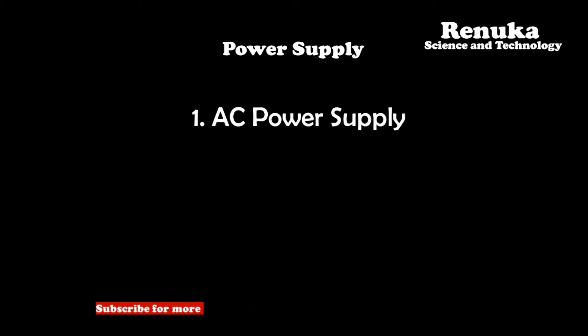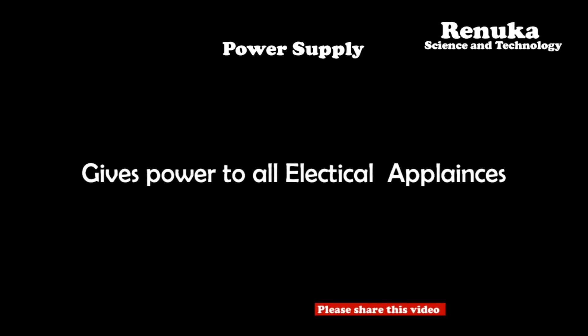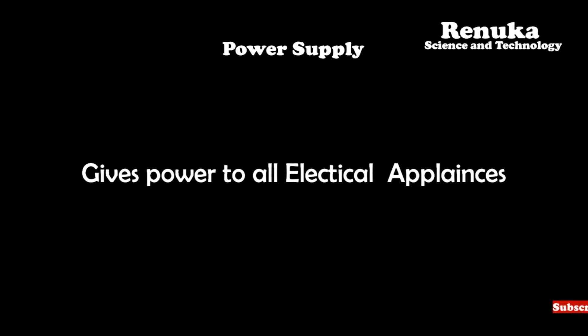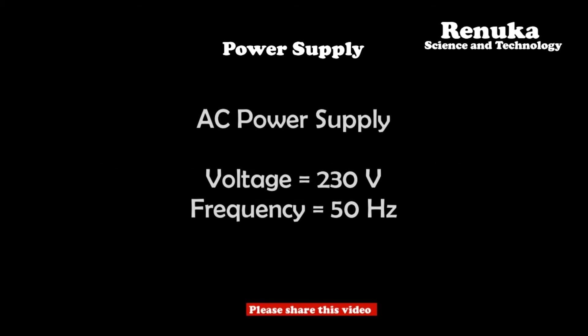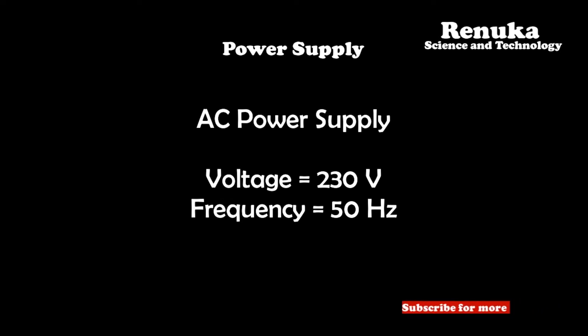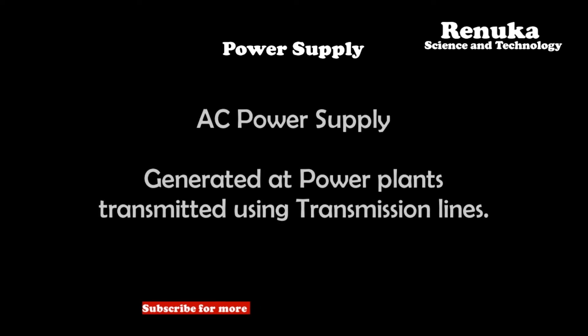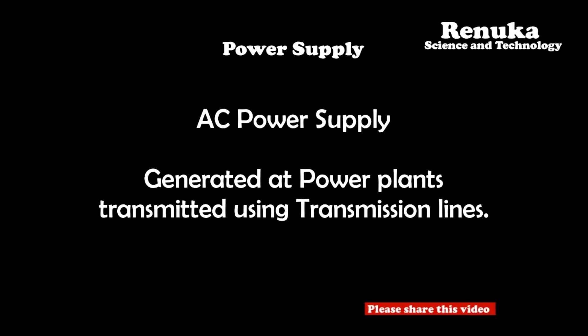This power supply is of two types. The first is called AC power supply, which is used for domestic and industrial applications worldwide. All electrical devices and appliances like fridges, air conditioners, fans, motors, pumps, light bulbs, electric irons, electric geysers, and induction cooktops work on AC power supply. In India, the domestic power supply is 230 volts with a current rating of 5 amperes and a frequency of 50 Hz.